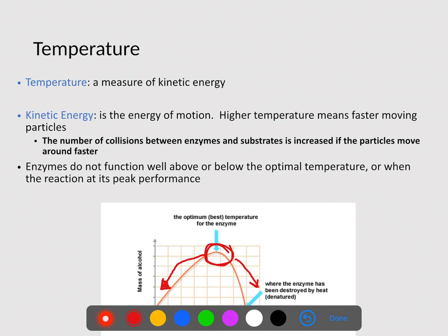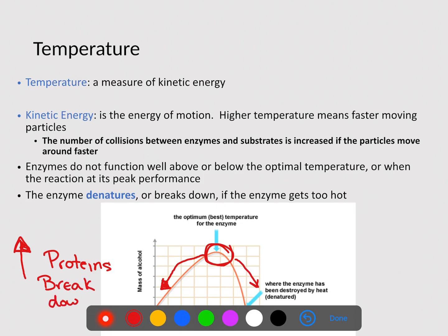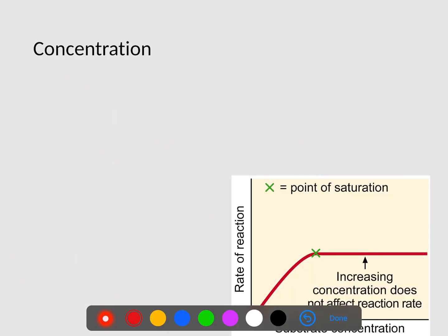The optimal or best pH is a very narrow range. So enzymes denature or break down if the enzyme gets too hot. So if we are increasing temperatures, the proteins break down. And if they break down and they change shape, they're not going to be able to function properly.